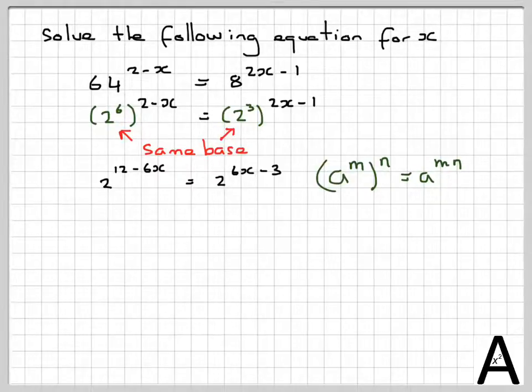Now, because we have the same base, because we still have 2 and 2 here, I can say the following: 12 minus 6x must be equal to 6x minus 3, because the powers must be the same if they're equal.